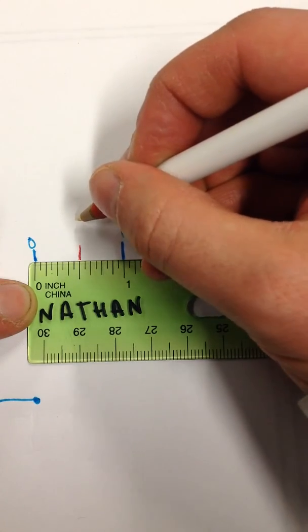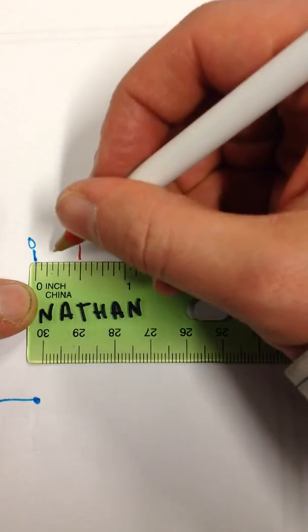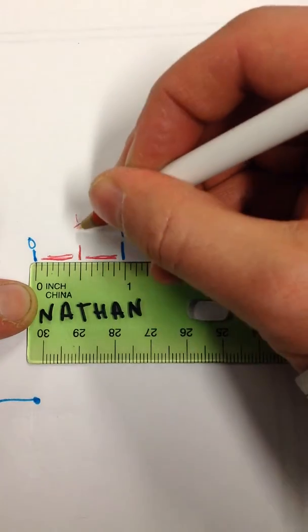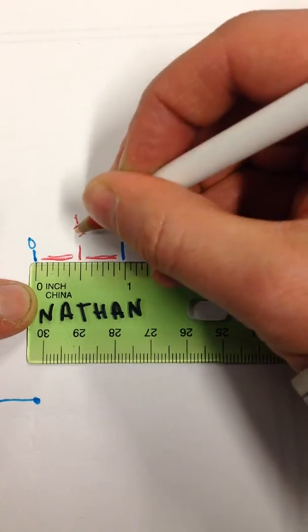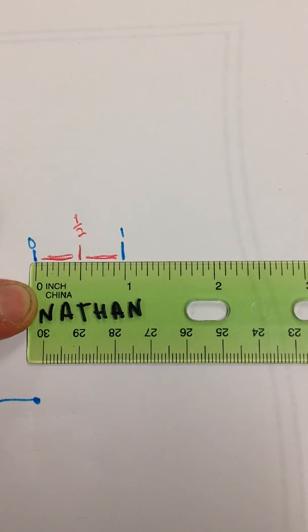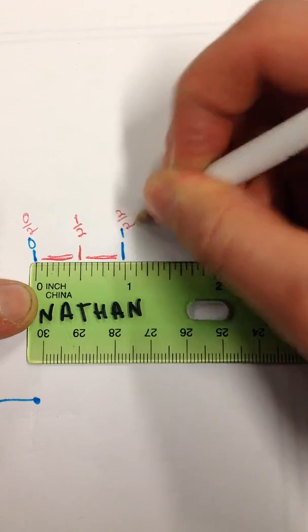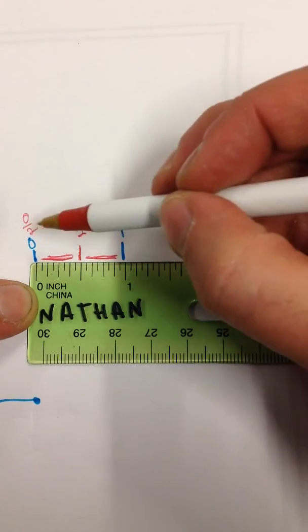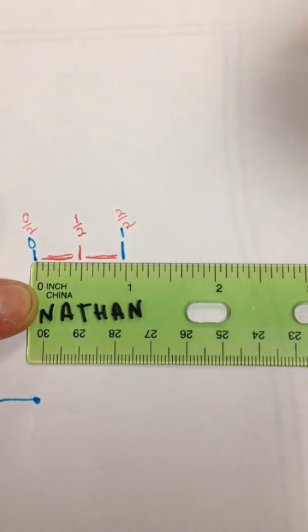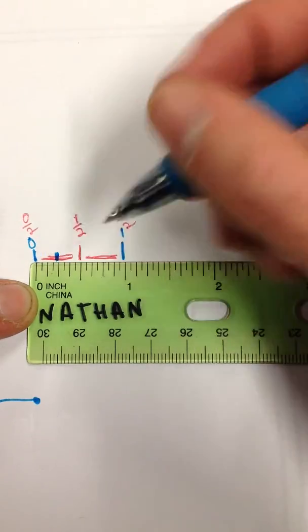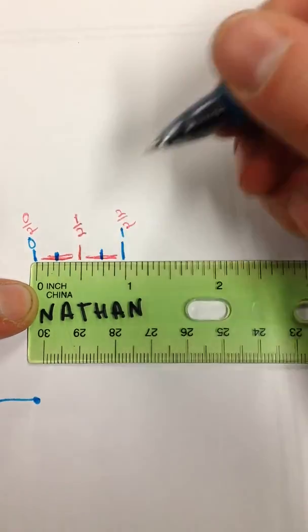And what is that called again? This is called the one half inch mark. This is zero halves. And this is two halves. One half, two halves. Now we'll split it up into fourths. Take your half. Turn it into two. Take this other half. Turn it into two.